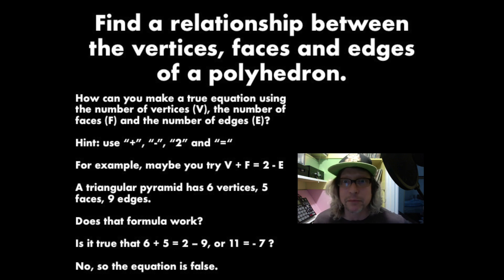So let's say, for example, I tried to come up or I made the formula V plus F is equal to two minus E. I used all the symbols. Well, let's see. Does that work? I know a triangular pyramid has six vertices, five faces, and nine edges. So does the formula work in that case?